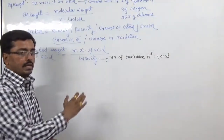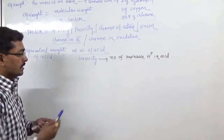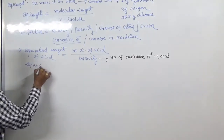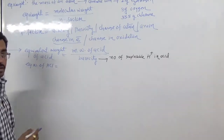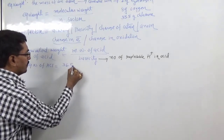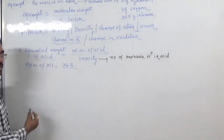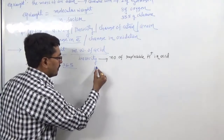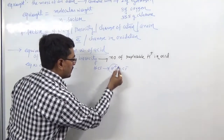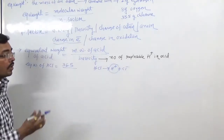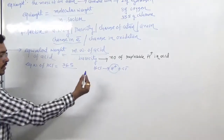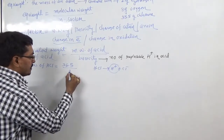Another way to define basicity: it is the number of hydroxyl ions required to neutralize the H⁺ ions present in an acid. For example, hydrochloric acid has a molecular weight of 36.5, and the replaceable H⁺ ion is just one, so basicity is one.